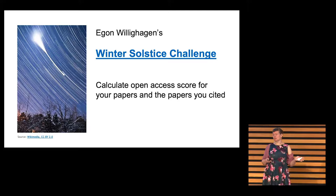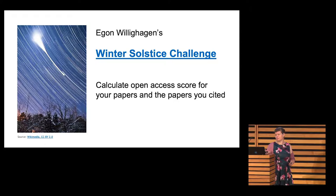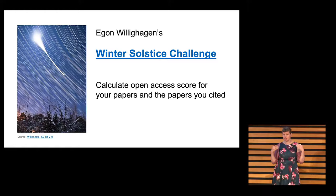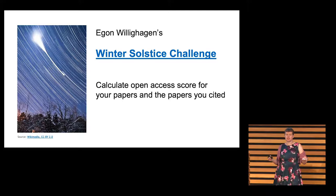This challenge — what he challenged people to do was to find a way to calculate something like an open access score, not only for the papers you yourself published that are open access, but also for the things that you cite. How much of that is open access? And he challenged people to devise an algorithm for that using open source tools and software.